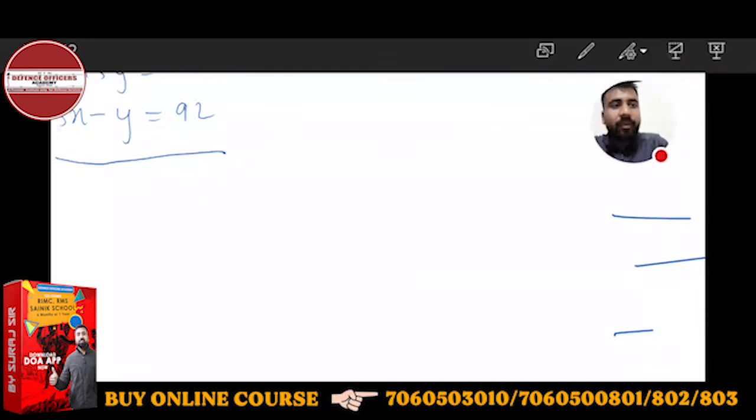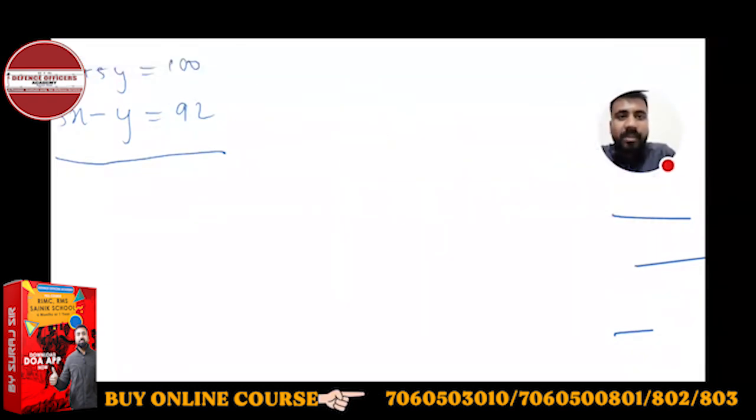I have to make the coefficient the same so that things cancel. I'll multiply the first equation by 3 so that X and X cancel and I get Y. This will be 3X plus 15Y is equal to 300. And the second equation is 3X minus Y is equal to 92.